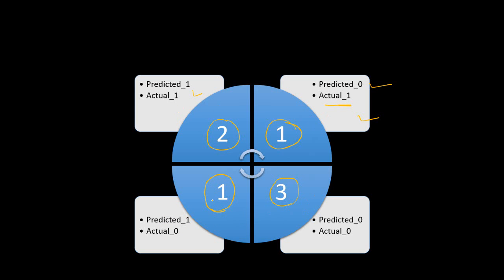The matching categories are the diagonal elements and the off-diagonal elements are the mismatching cases. We always want the diagonal numbers to be maximum and the off-diagonal numbers to be as minimum as possible. By looking at the confusion matrix, one can tell how well the model is performing.